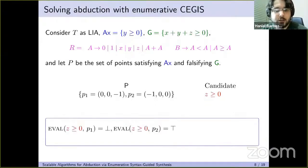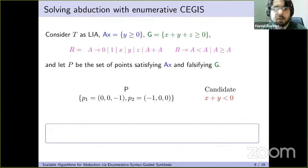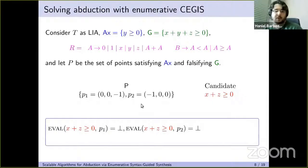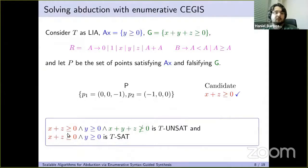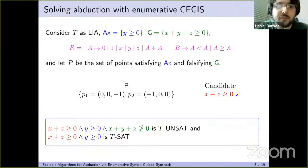Eventually I get another candidate that passes my two accumulated points. I perform the satisfiability checks and both criteria for the specification hold: it is sufficient to entail the goal together with the axioms — meaning the check is unsatisfiable as required — and it is consistent with the set of axioms. Therefore I have found a solution to the abduction problem.